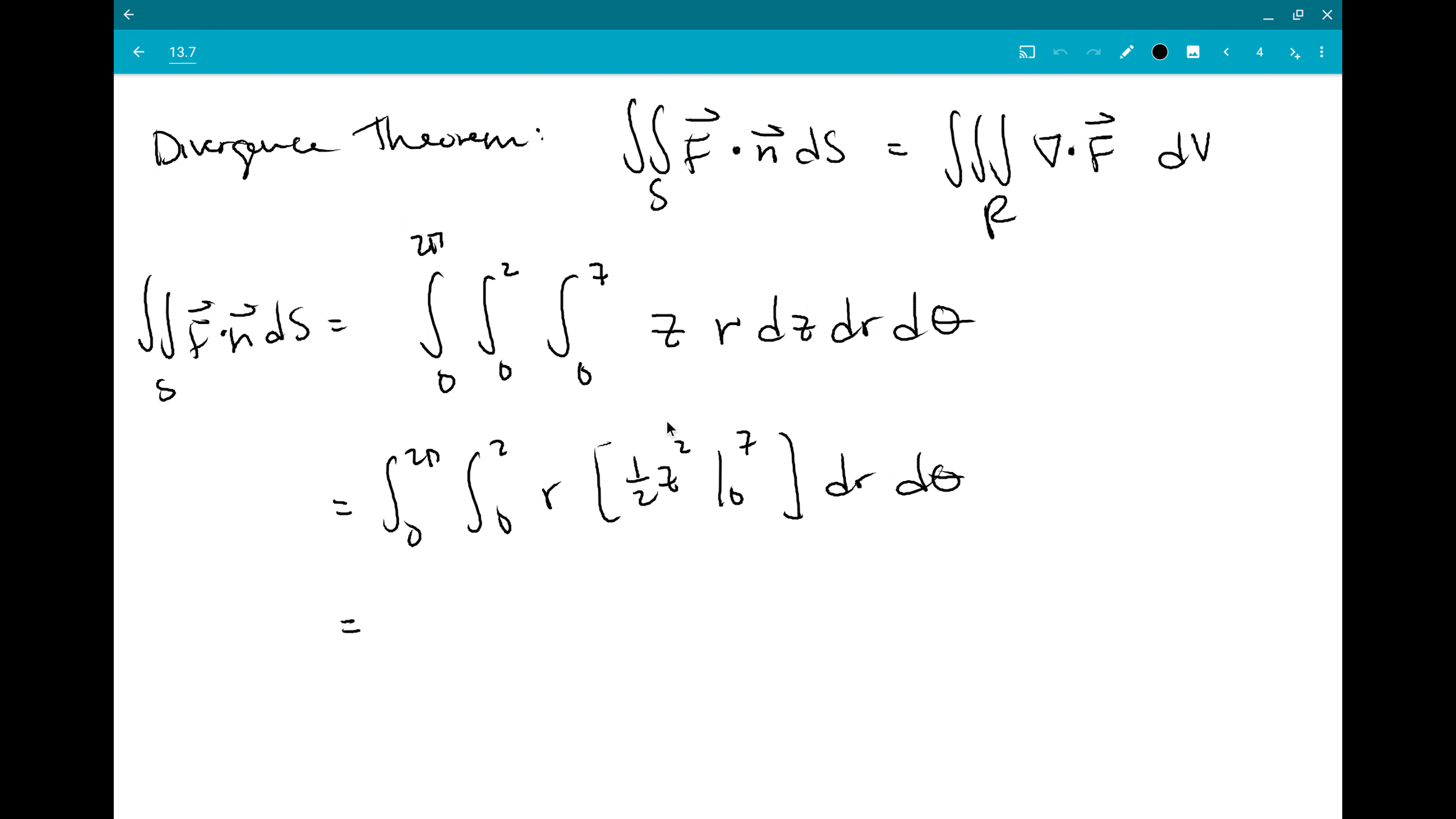Zero to two for r, and then this just becomes forty-nine over two minus zero. So I'm going to pull that constant out, and then we could go ahead and evaluate the rest of the integral by hand. It wouldn't be that hard, but...